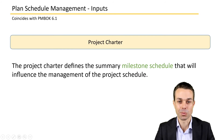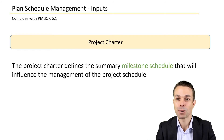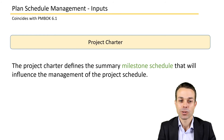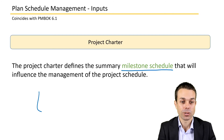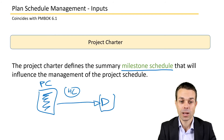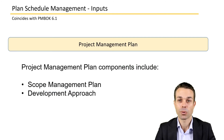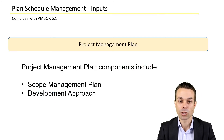Let's look at the inputs in a bit more detail. The project charter provides the summary and high-level detail, specifically the summary milestone schedule that we initially outlined to initiate the project. We made our project charter with a high-level idea of what it might take to deliver the project, so now we use that as an input into planning our schedule management to get a basic idea of what we might need to do.